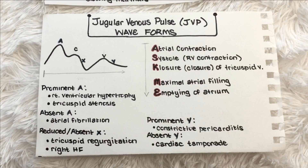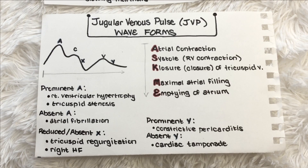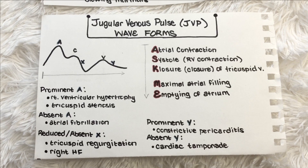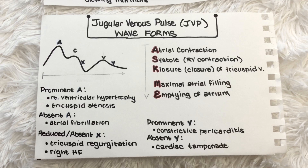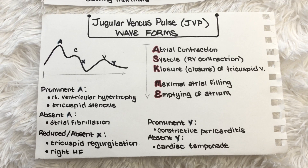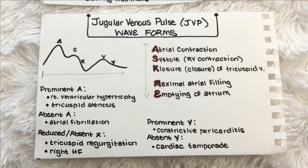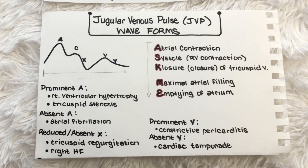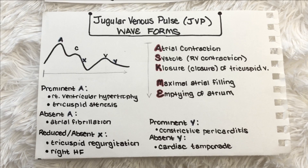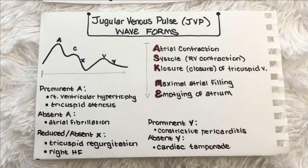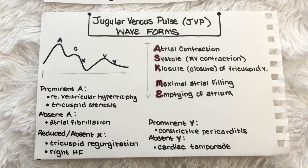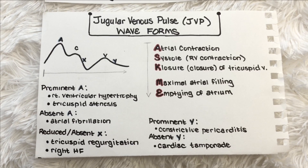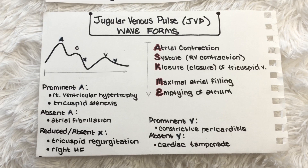The jugular venous waveform is split up into five parts. The A wave corresponds to atrial contraction. The C wave corresponds to right ventricular contraction. The X descent corresponds to the downward displacement of the closed tricuspid valve during the right ventricular ejection phase. The V wave corresponds to the increase in right atrial pressure with filling against the closed tricuspid valve. And the Y descent corresponds to right atrial emptying into the right ventricle.